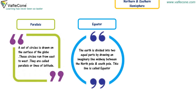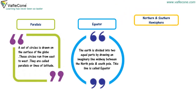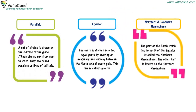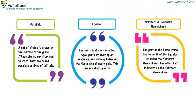Northern and southern hemisphere. The part of the earth which lies to the north of the equator is called the northern hemisphere. The other half is known as the southern hemisphere.